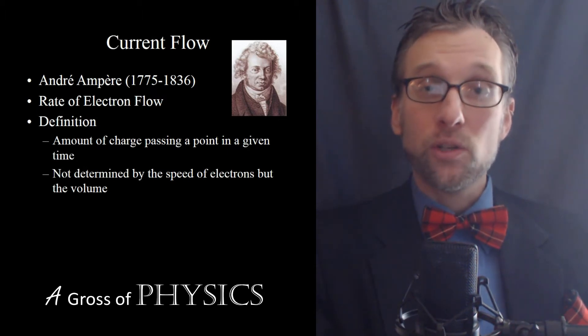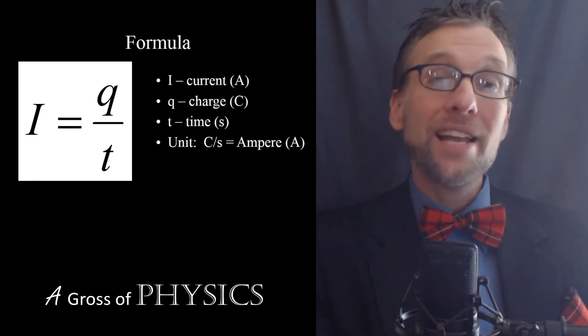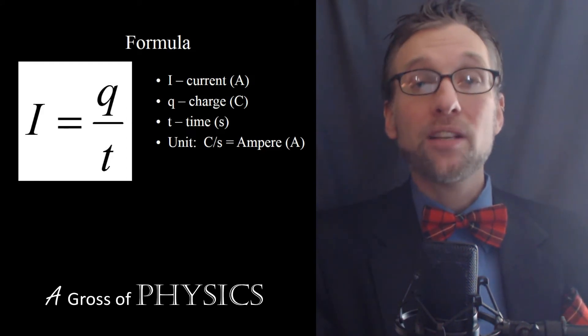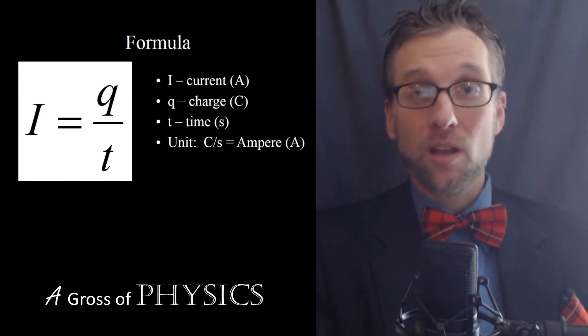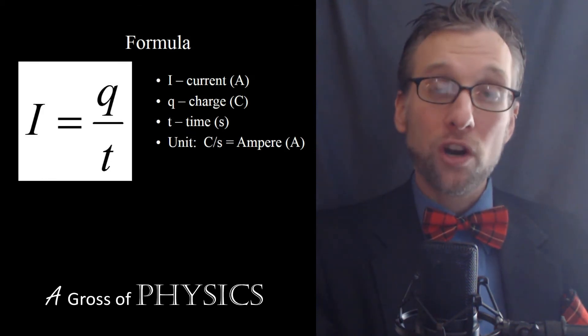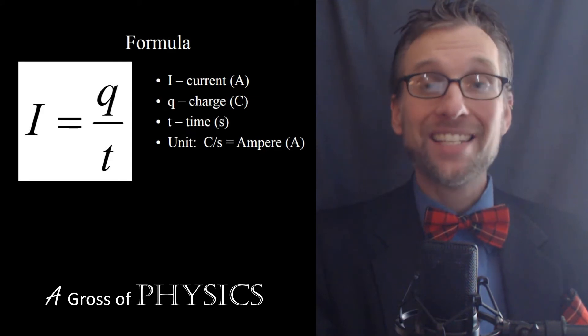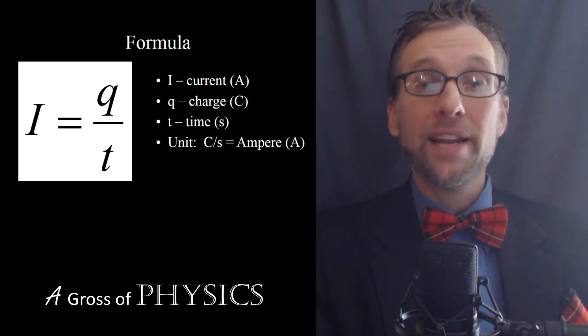There's an equation that deals with the current in a circuit and that's I equals Q over T, and I think of it as I am a QT. Now I is the symbol for current. We use I to represent the current and it's used as our variable. The unit for current is named after Ampère and it's the amps. Q is charge, measured in coulombs, and T is time, measured in seconds.